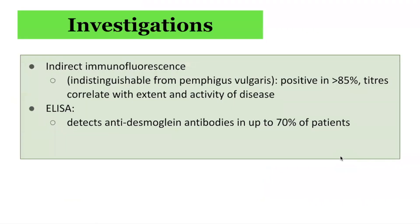Other investigations include indirect immunofluorescence, which results are indistinguishable from Pemphigus vulgaris. There is positivity in over 85% of cases, and titers typically correlate with the extent and activity of disease. An ELISA test can also detect anti-desmoglein antibodies in up to 70% of patients.